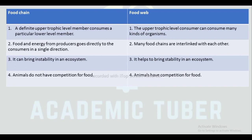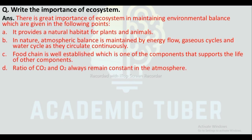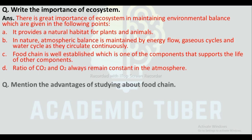Question: Write the importance of ecosystem. Ecosystem has great importance in maintaining environmental balance: it provides a natural habitat for plants and animals; a natural atmospheric balance is maintained by energy flow, gaseous cycle, and water cycle as they circulate continuously; the food chain is well established, which supports the life of other components; and the ratio of carbon dioxide and oxygen always remains constant in the atmosphere.